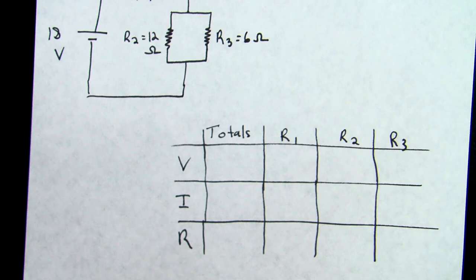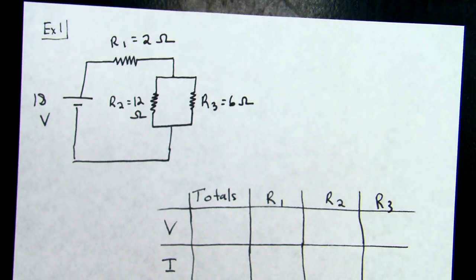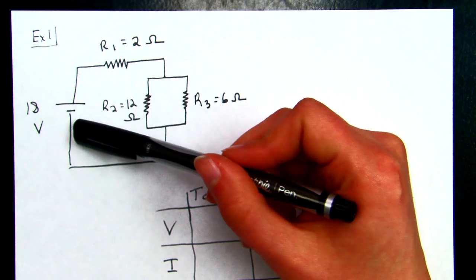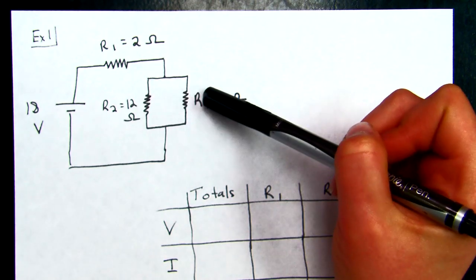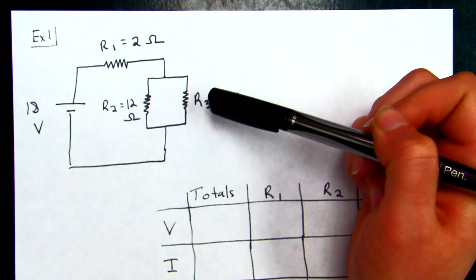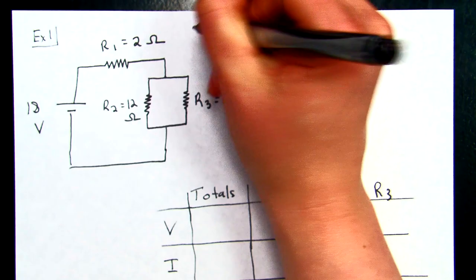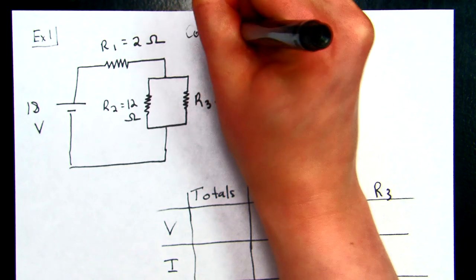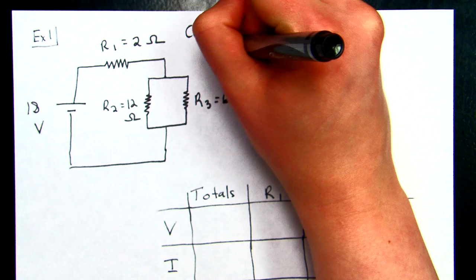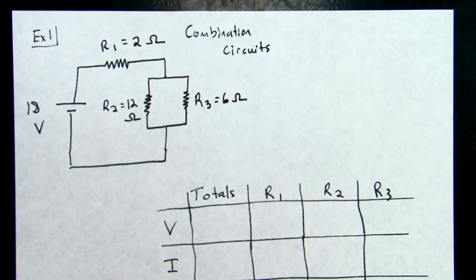Here is our first circuit. Right away, hopefully you can see that this is not like a normal parallel circuit. We still see our symbols for batteries and resistors, but instead of being one loop or several loops, we have kind of this combination of both. And that's why we call these combination circuits. The rules for series and parallels still apply, but we are going to have to use them a little bit more carefully in order to solve our circuit.